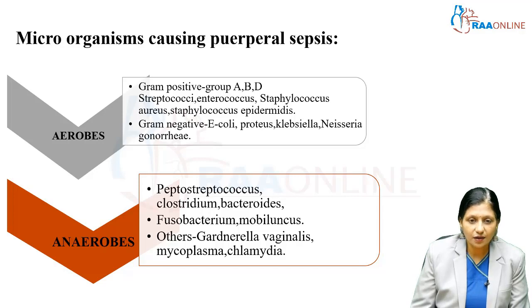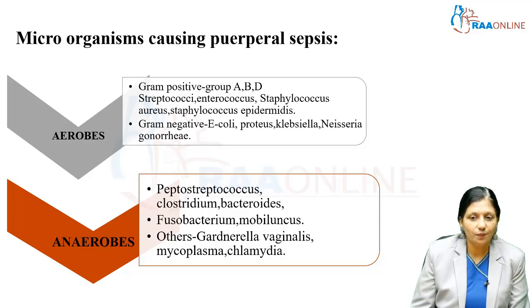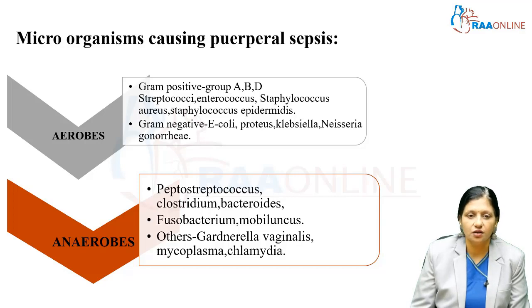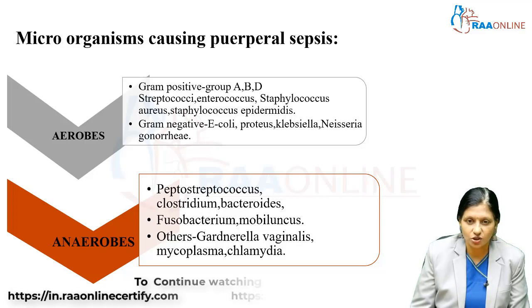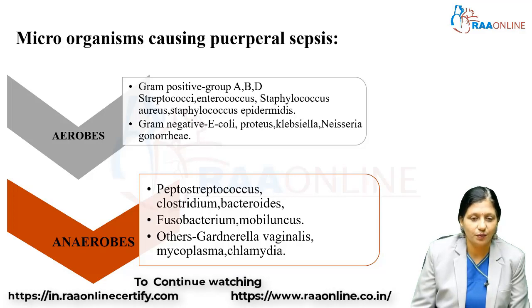Coming to the anaerobic bacteria causing childbed fever, we have Peptostreptococcus, Clostridium, Bacteroides, Fusobacterium, Mobiluncus, and other microorganisms responsible for bacterial vaginosis like Gardnerella vaginalis, Mycoplasma, and also Chlamydia can cause Puerperal sepsis.